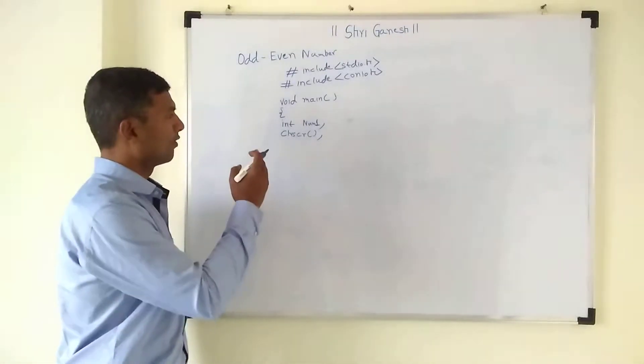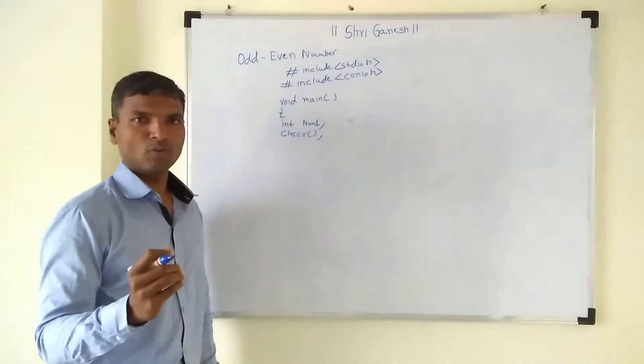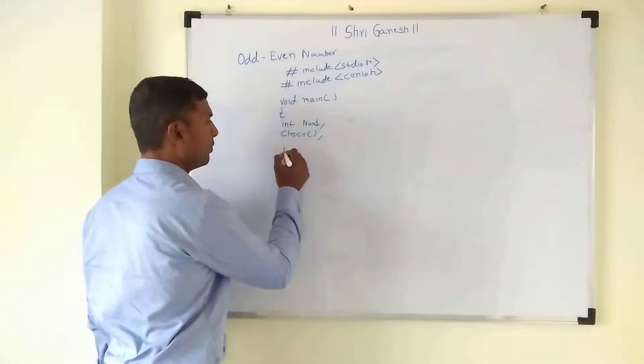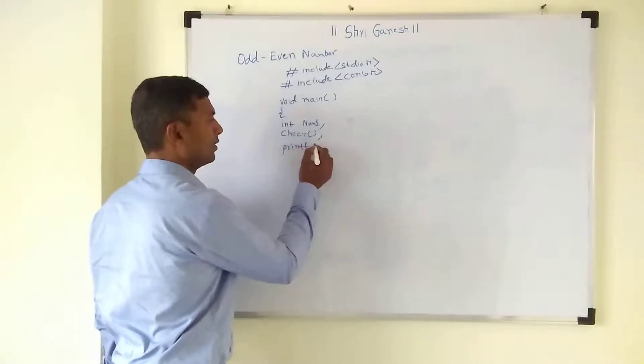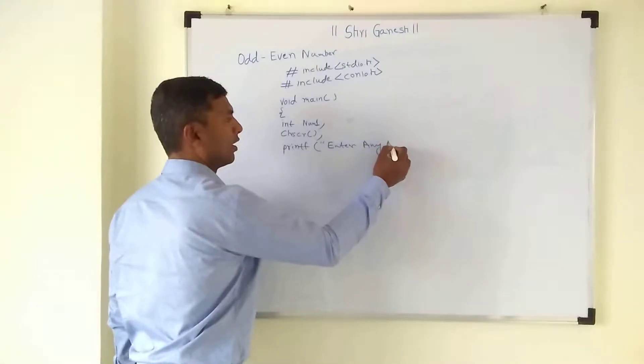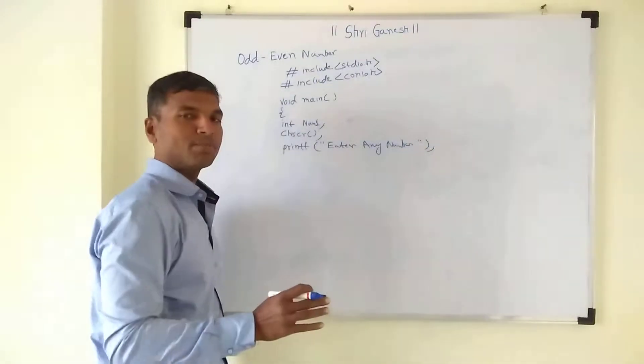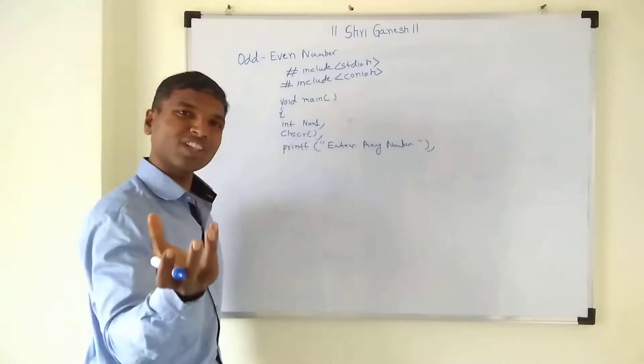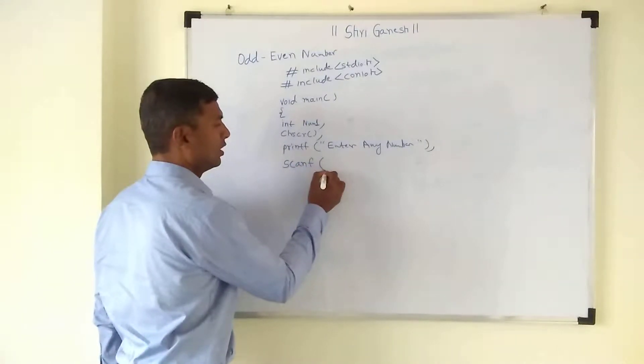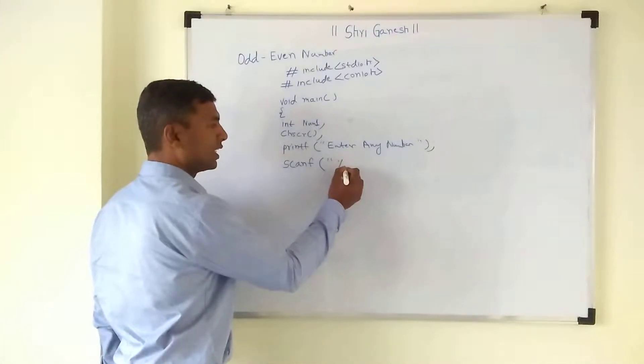Now once we declare the first local variable integer num1, we want to take that number from the user. So if you want to take a number from user, you have to use the scanf function. First we will give the message to user in printf: enter any number. Once this message will be displayed, the user will enter the number. Now we want to store that number in num1. For that we are going to use the scanf.